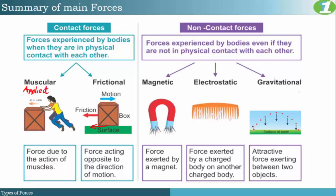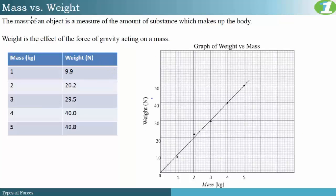There is a direct relationship between mass and weight, which has to do with gravity. The mass of an object is a measure of the amount of substance which makes up that body, while weight is the effect of the force of gravity acting on that mass.